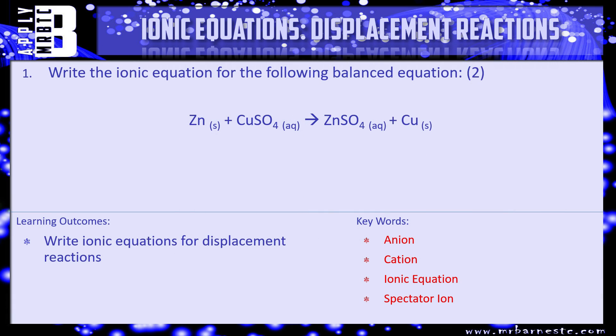Now let's look at the type of question you can get in the exam. Write the ionic equation for the following balanced equation: Zn(s) + CuSO₄(aq) → ZnSO₄(aq) + Cu(s). Remember — put the ones that aren't aqueous down as they are, work out from the charges you know (in this case SO₄²−) what the charge of your copper ion and zinc ion are, then remove your spectator ions. Pause the video, have a go, and we'll see how you've done.